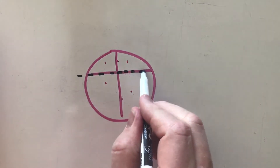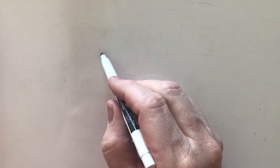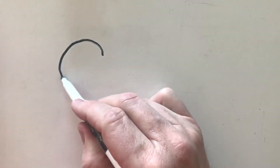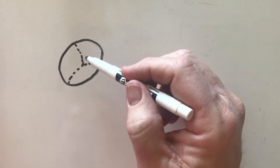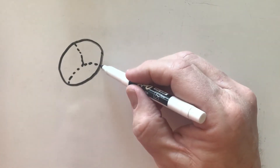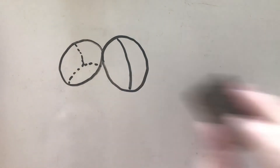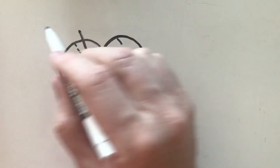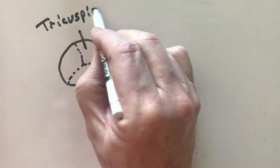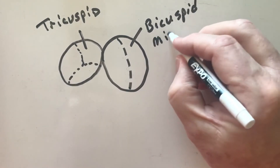Imagine we're dissecting this — we cut right along here and remove the top. What it would look like is: I have my tricuspid valve in here. Remember, the tricuspid valve is between the right atrium and the right ventricle. Then I would have my bicuspid valve. This is tricuspid, this is bicuspid — also known as the mitral valve. I'm using those terms interchangeably.